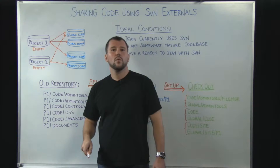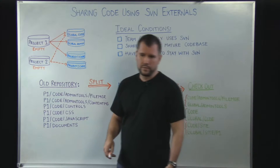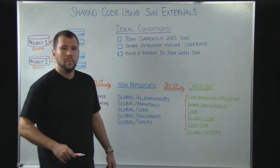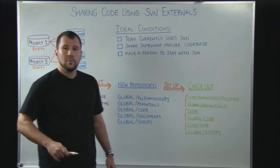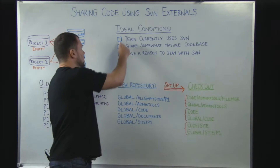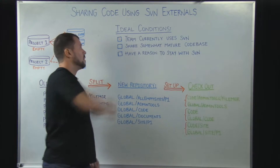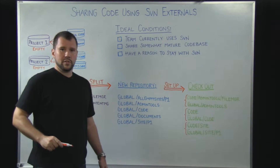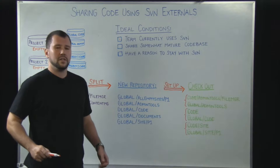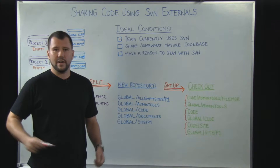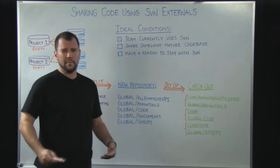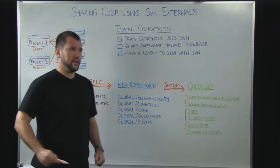Now that we know what an SVN external is, let's talk about some of the conditions that would apply to make it appropriate to use them. Number one: your team currently uses Subversion. You're not coming from a clean slate with the ability to explore options like TFS or Git. You're already using Subversion and you're familiar with it, so there are pros there.